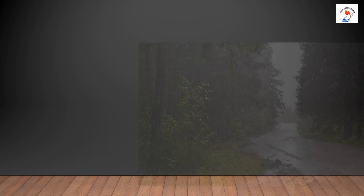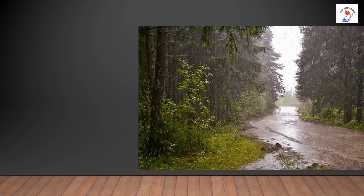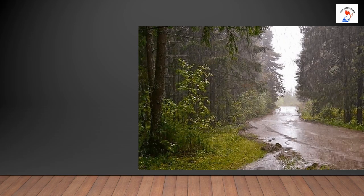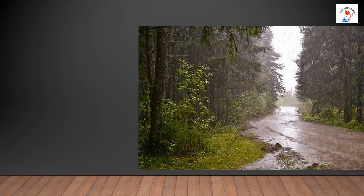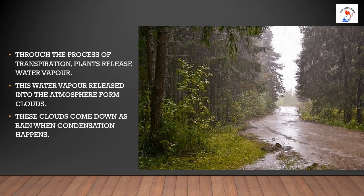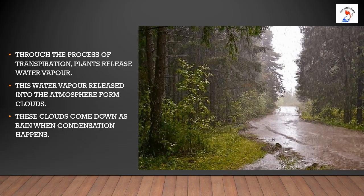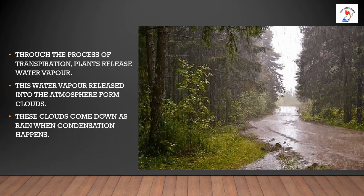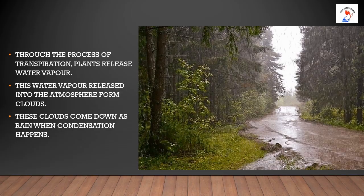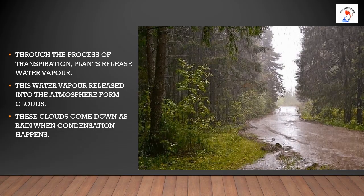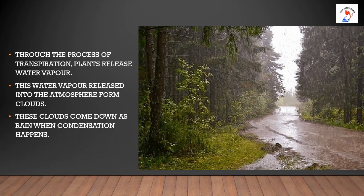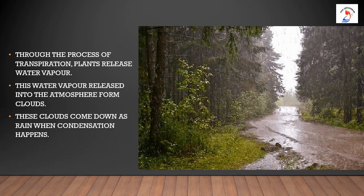What do you observe in the slide children? It's raining and the weather is so cool. Now we will see how plants help us in getting rain. Through the process of transpiration, plants release water vapour. Loss of water in the form of water vapour from the leaves is called transpiration. This water vapour released into the atmosphere forms clouds. These clouds come down as rain when condensation happens. So that's why we say we have to grow more trees.